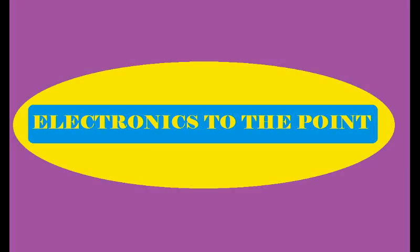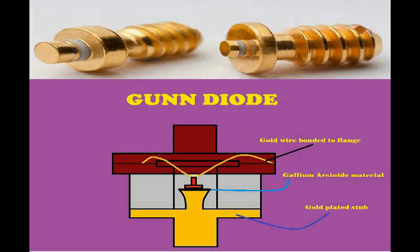Welcome to Electronics to the Point. In this video we shall learn the working of the Gunn diode. Gunn effect diodes are named after the scientist J.B. Gunn, who discovered that gallium arsenide can be used for microwave oscillation generation.